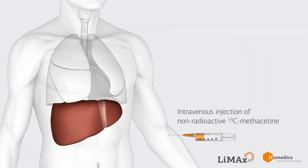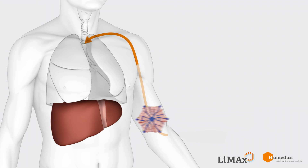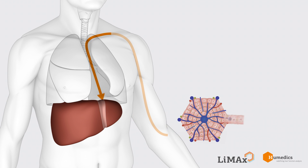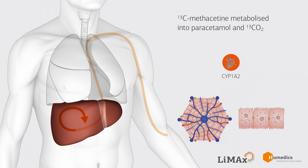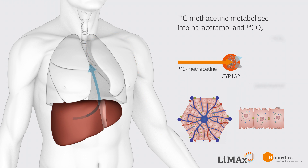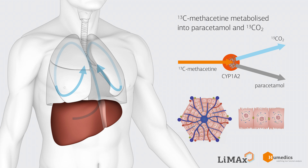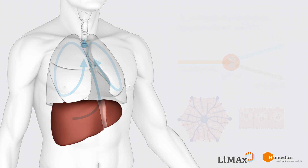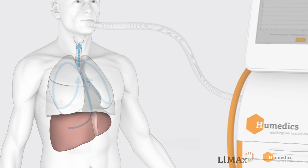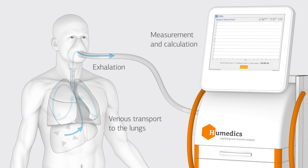In the LIMAX test, an isotope labeled drug, carbon-13-methacetine, is administered and is then metabolized in the liver by CYP1A2 into paracetamol as well as carbon-13 dioxide, which is exhaled. The amount of carbon-13 dioxide exhaled is proportional to the amount of liver function capacity present.